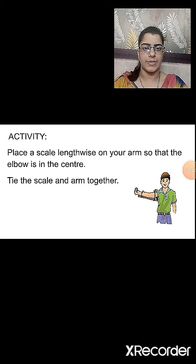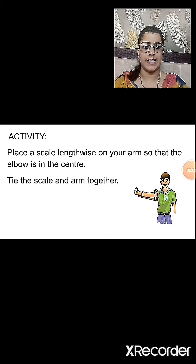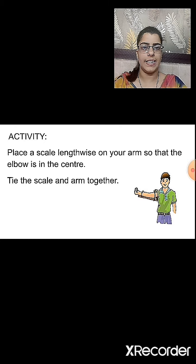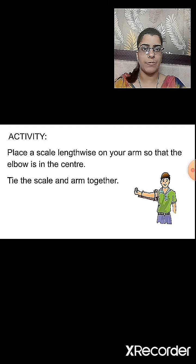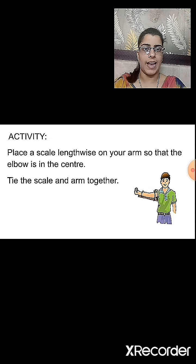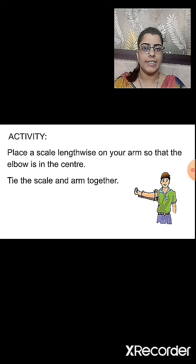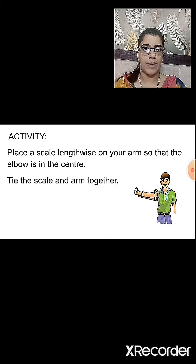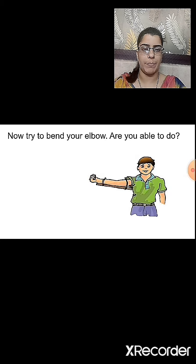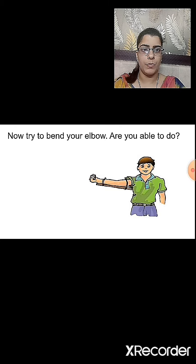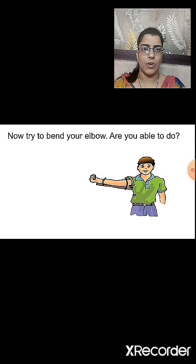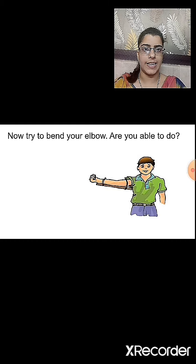Here is another activity. Place a scale lengthwise on your arm so that the elbow is at the center. Take a scale the length of your arm so the elbow comes at the center of the scale. Now tie the scale and the arm together. Try to bend your elbow. Will you be able to bend your elbow after tying the scale? No, it will not be easy to bend the elbow after the scale is tied.